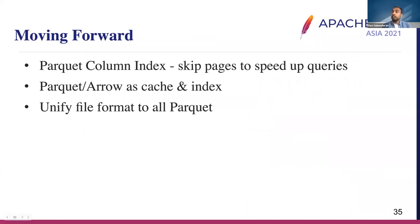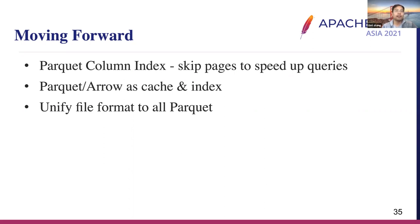Looking ahead, we will explore Parquet Column Index to skip pages and speed up queries. Each page has its min/max values, and if a query filter doesn't fall into a page's range, we can skip it. We also want to use Apache Arrow as cache and secondary index. Last but not least, we want to unify the file format to all Parquet format. Thank you everybody.